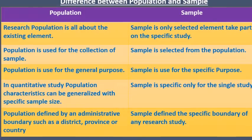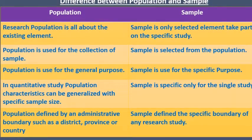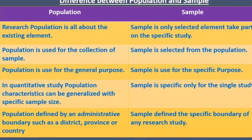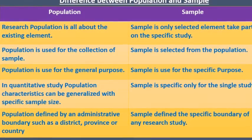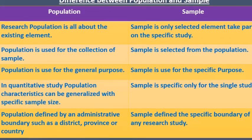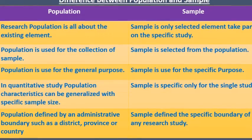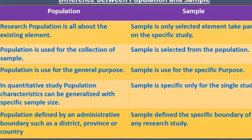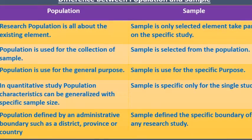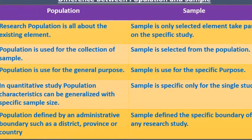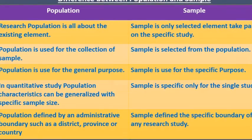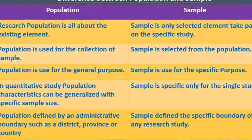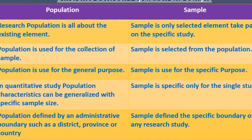Fourth, in a quantitative study, population characteristics can be generalized with a specific sample size, while the sample is specific only to a single study. Fifth, population is defined by an administrative boundary such as district, province, or country, while a sample defines the specific boundary of a research study such as a survey, interview, poll, and so on.